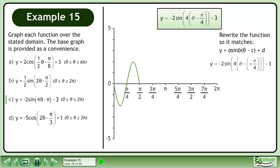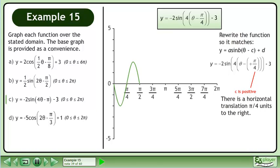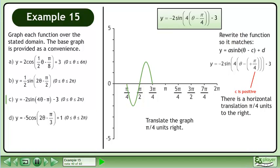Rewrite the function so it matches y equals a sine(bθ - c) + d. The c parameter is positive π over 4. There is a horizontal translation, π over 4 units to the right. Translate the graph π over 4 units right.